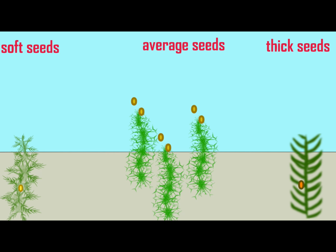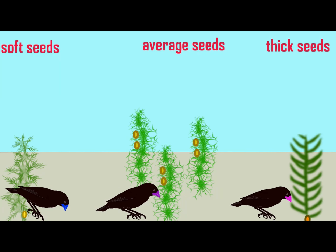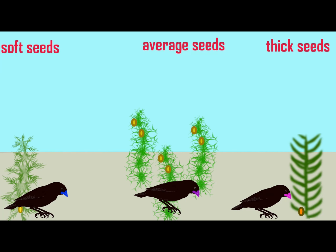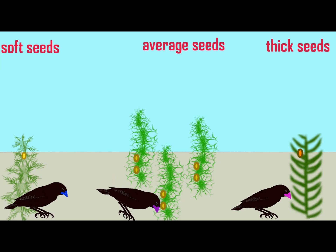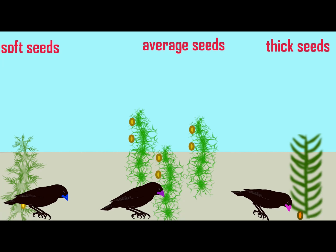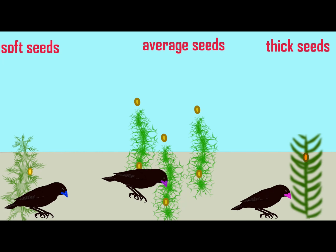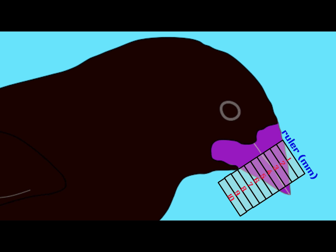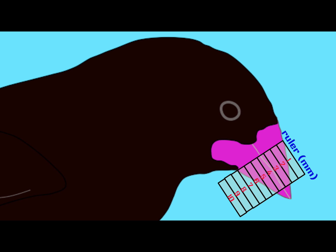In this first example of stabilizing selection, the beak depth will stay constant as long as the environmental conditions do not change. The population is maximally adapted to efficiently make use of the seeds found in this environment, and thus the ones with the average beak depth are those which are best able to make use of these food sources. Thus, in stabilizing selection, the population average will tend to stay constant over time.